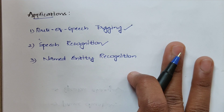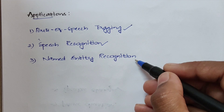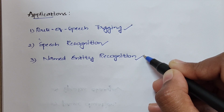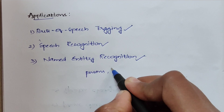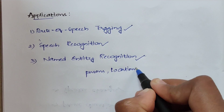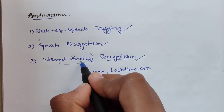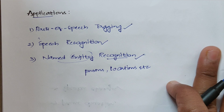Subtitles generated automatically for a video is nothing but speech recognition. The third application is named entity recognition, which means recognizing entities that have names — either persons' names, locations, or anything else. So this is about the methods used to find the structure of documents.